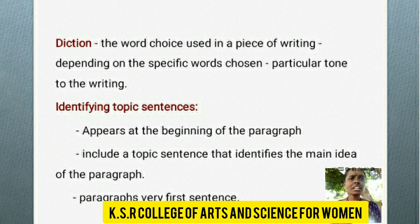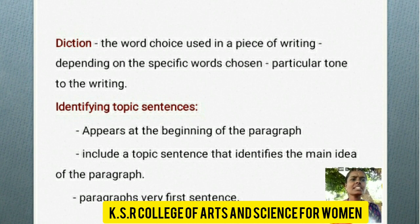Diction refers to the word choice used in a piece of writing. Depending on the specific words chosen, it gives a particular tone to the writing. Identifying topic sentences: a topic sentence appears at the beginning of the paragraph and identifies the main idea of the paragraph — it is the paragraph's very first sentence.